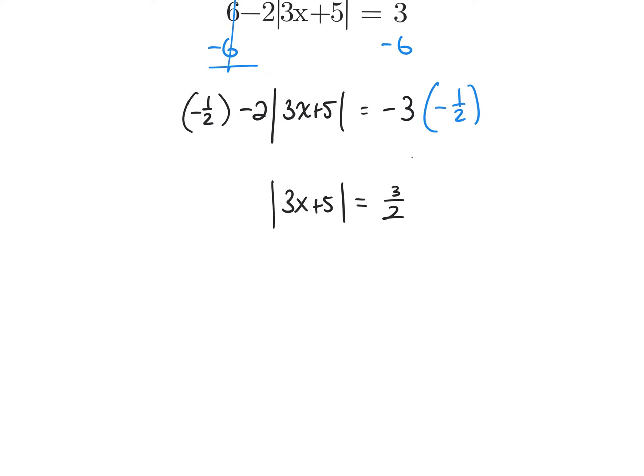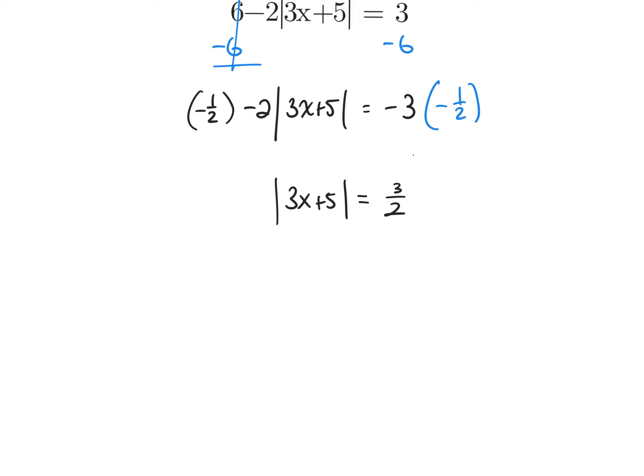We have Case 1 and Case 2 — the positive case and the negative case. Case 1 claims that the value inside the absolute value bars is positive. We already know the absolute value equals 3 halves, a positive value. So we're claiming that 3x plus 5 does indeed make the positive value of 3 halves.